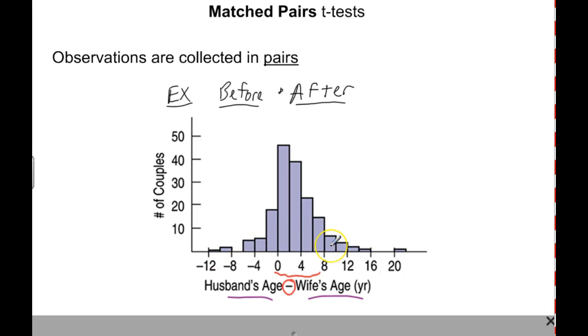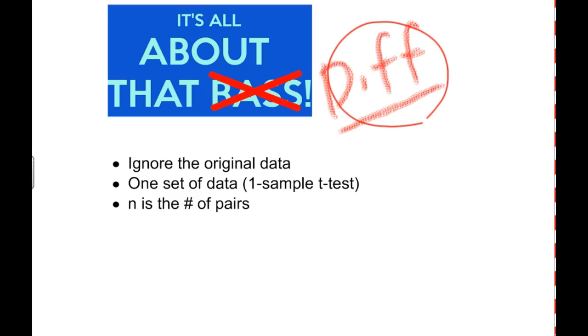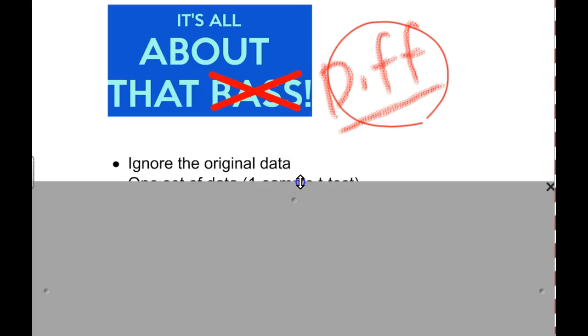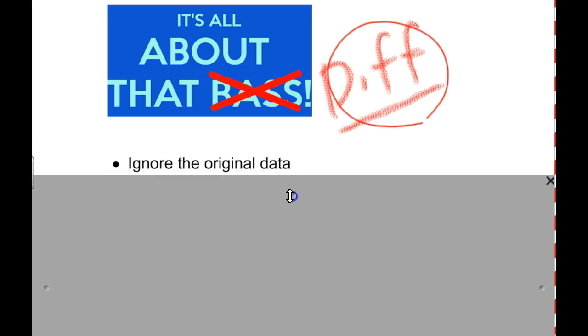But that's the type of thing we're looking at. Before and after, or husband and wife, or any type of data that is collected in pairs on purpose. It's really important to understand that it is all about that difference. It's all about the difference. It's not about each individual set of data. So husband's age, wife's age. In fact, we ignore the original data. We don't even look at it.